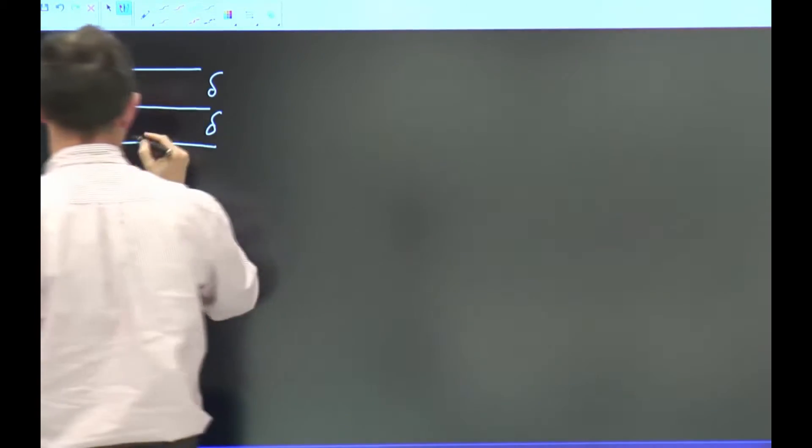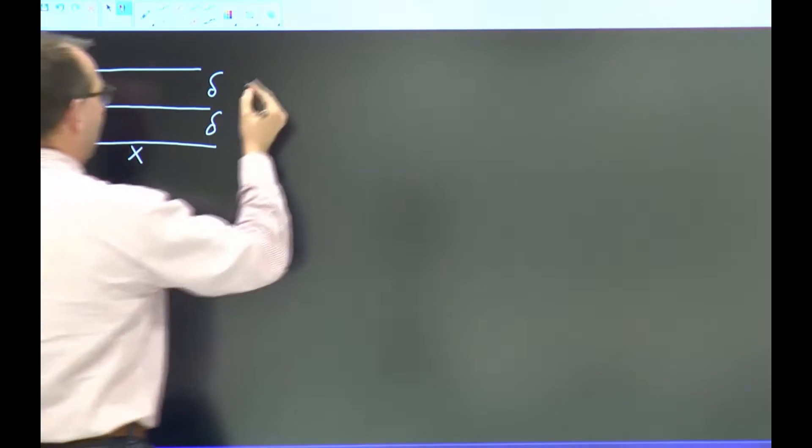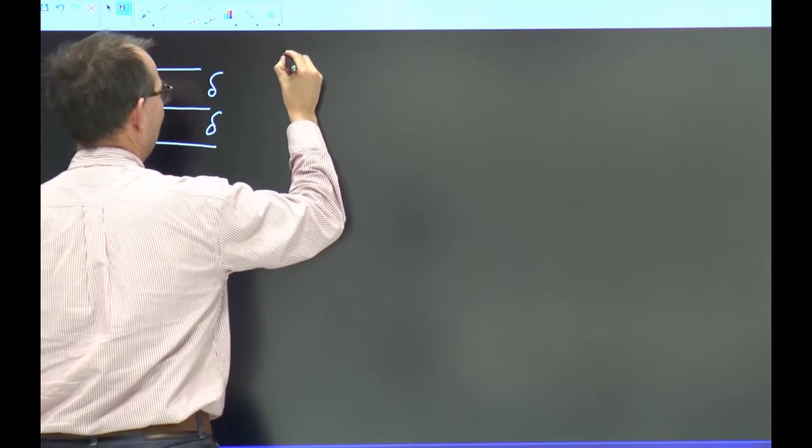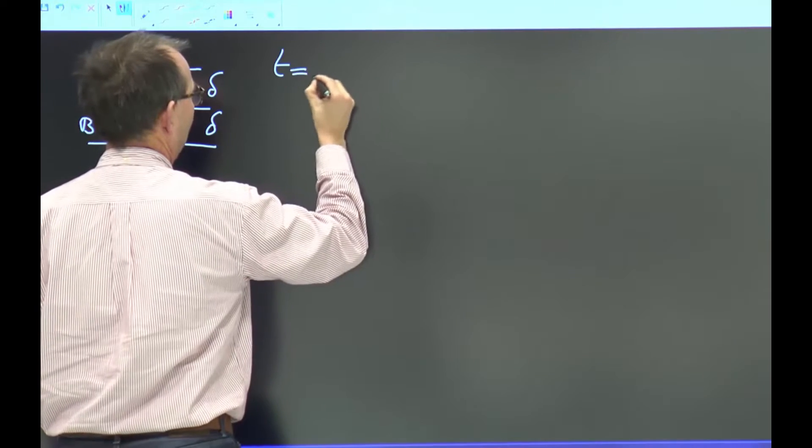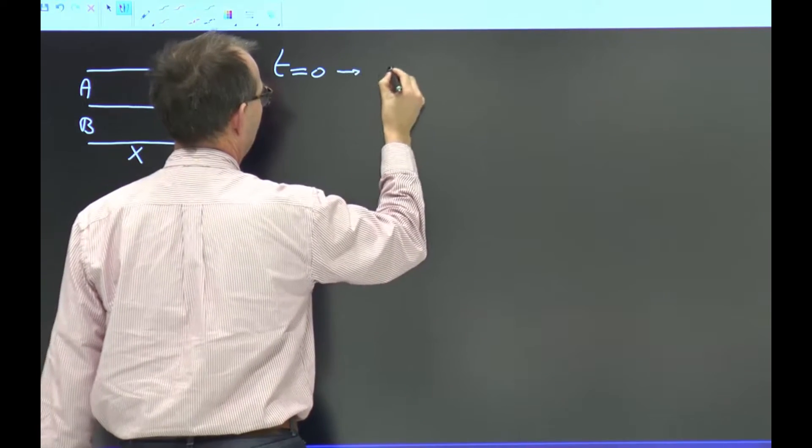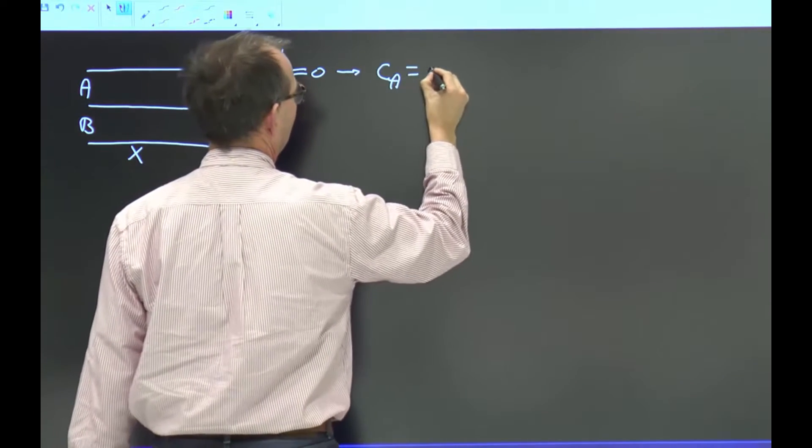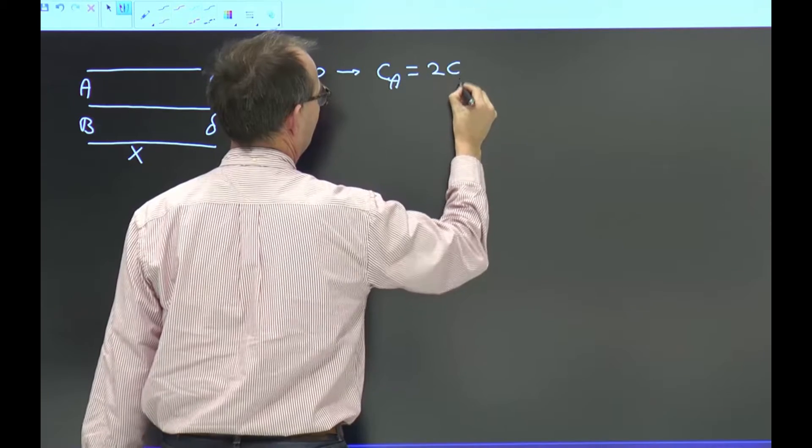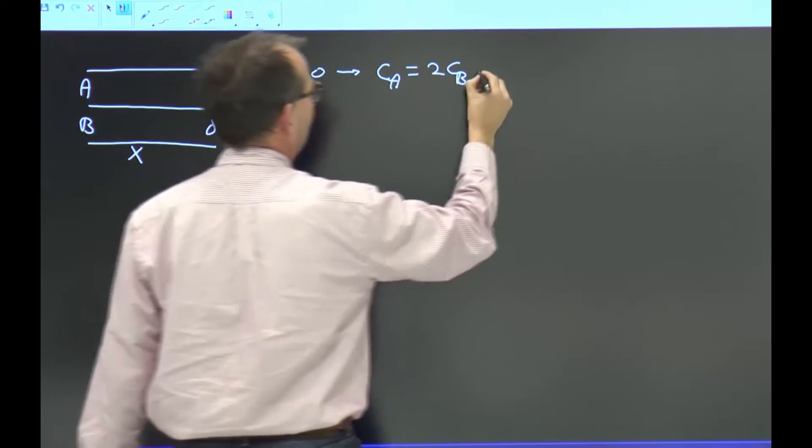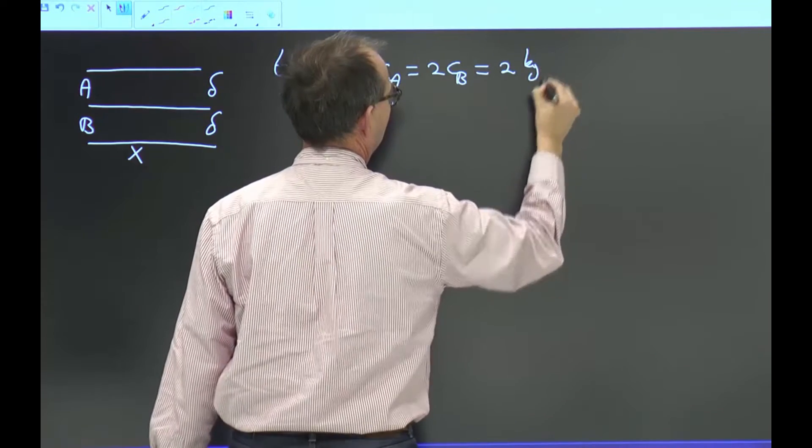In both of them a component X is dissolved. And initially, so at the start of our exercise, the concentration of X in A equals twice the concentration in B, and that is 2 kilogram per cubic meter.